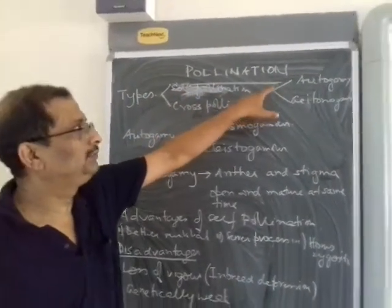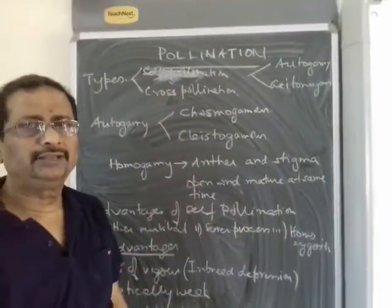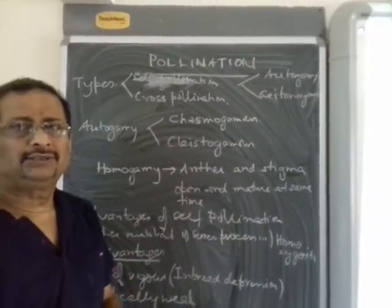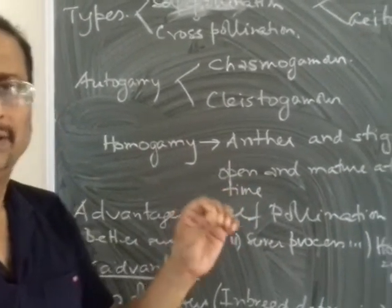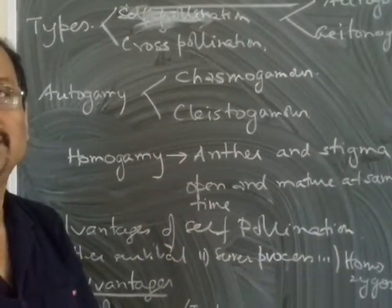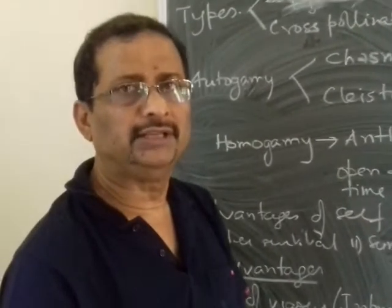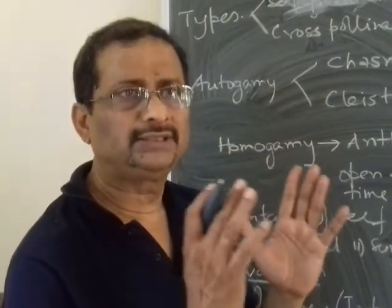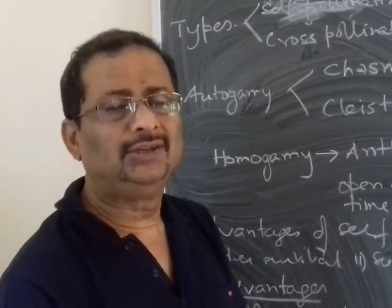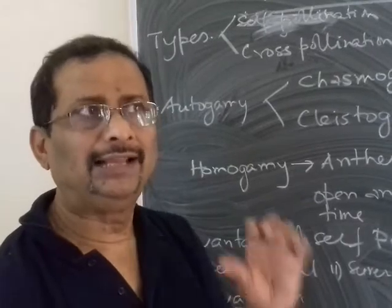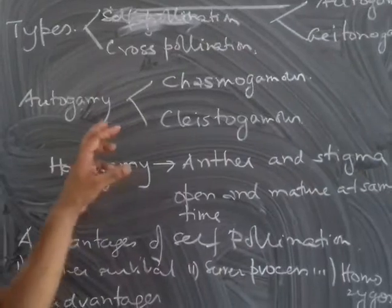Cross-pollination occurs when the pollen grain is transferred from the anther of one flower to the stigma of another flower of the same species on a different plant. Cross-pollination always involves two different plants, and it is called allogamy or xenogamy — both terms refer to cross-pollination.